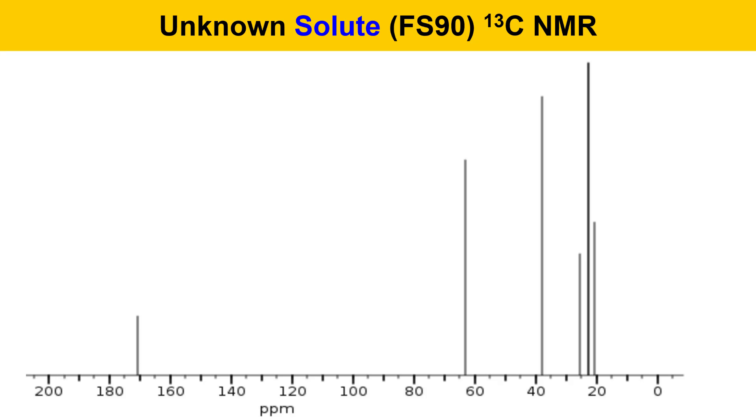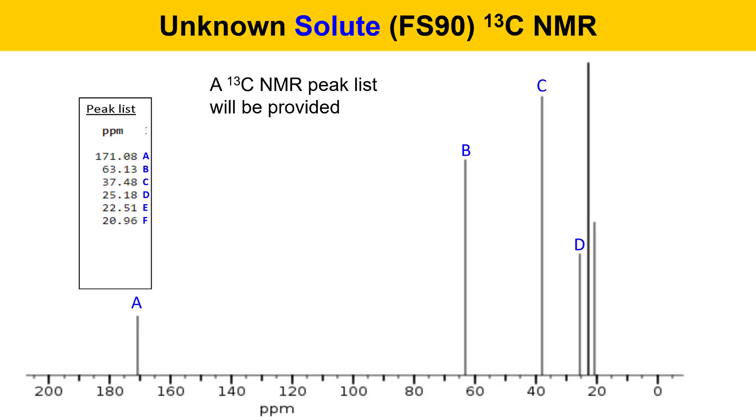Here's a carbon-13 NMR spectrum for the unknown solute FS90 that's featured in these demonstration videos for this experiment. A carbon NMR peak list will be provided. Here it is for this spectrum, where there are peaks I've labeled A through F. This is important for carbon-13 NMR spectra, where the peaks are very close together and it's hard to tell how many there are. You'll be able to look at the peak list and know for sure. Your carbon-13 NMR spectrum for your unknown solute will be organized similarly with a peak list. I'll label these peaks with capital letters in a way that's analogous to the way I labeled the proton NMR spectrum. When you figure out the structure of your unknown solute, you'll draw its structure and then draw capital A, B, C, and so on next to each one of the carbons to identify it and assign it.